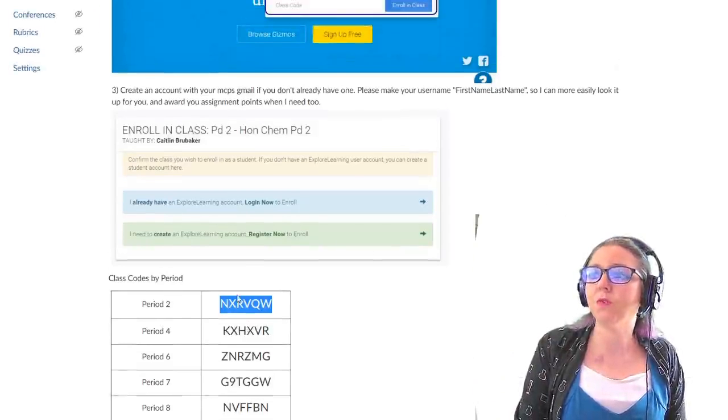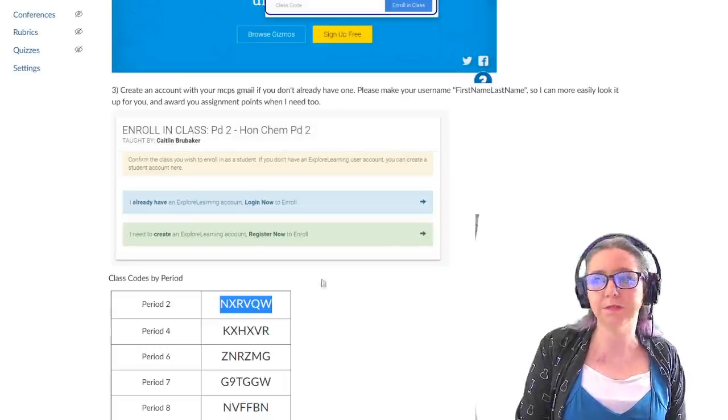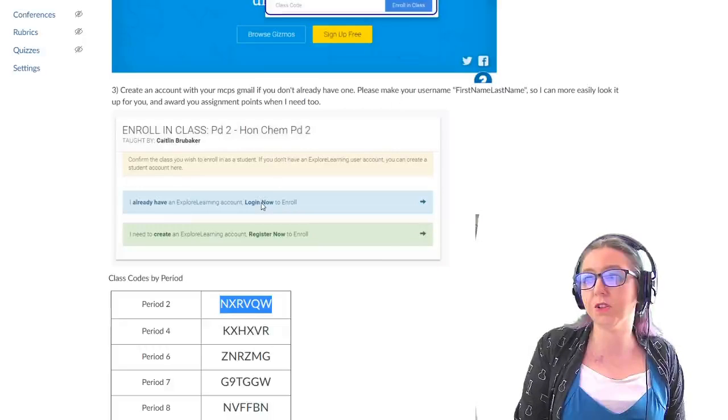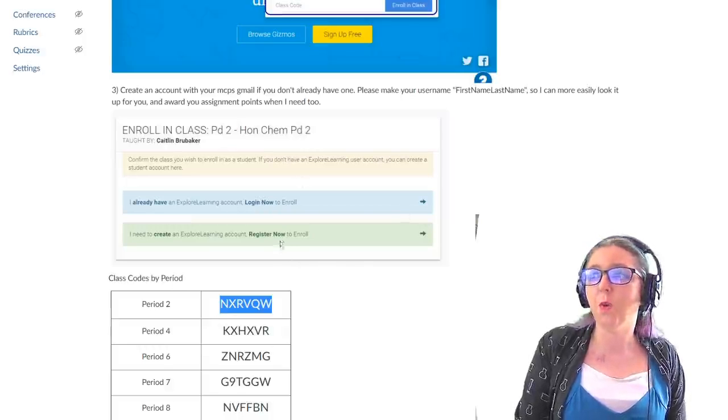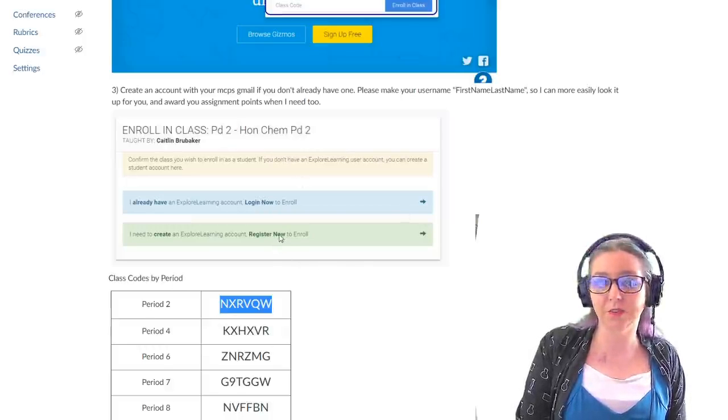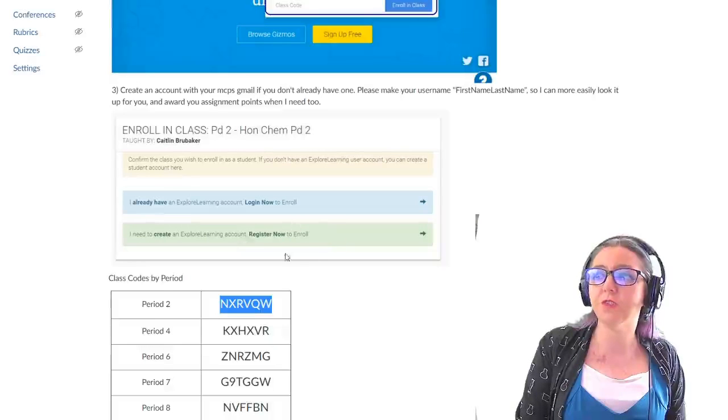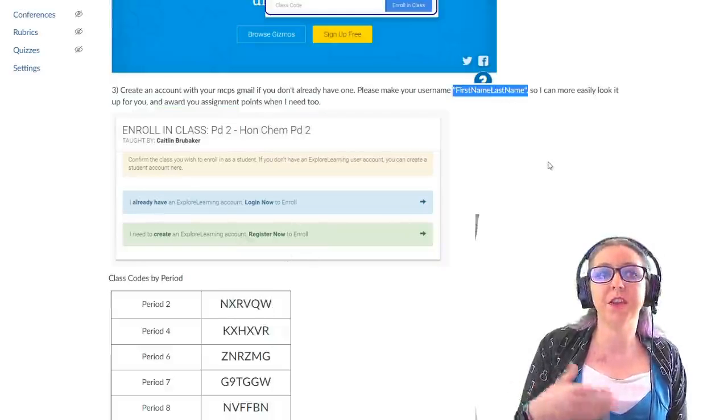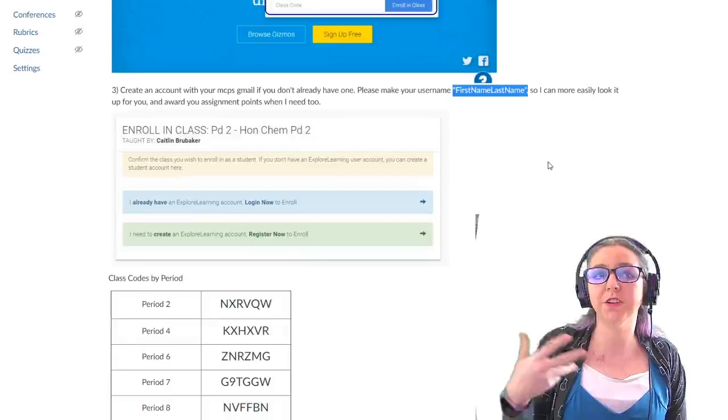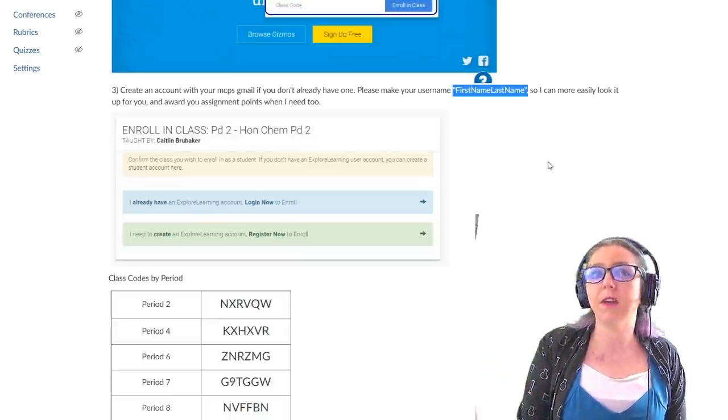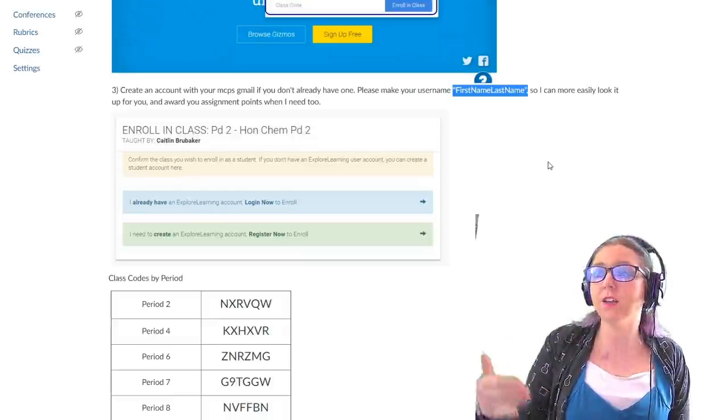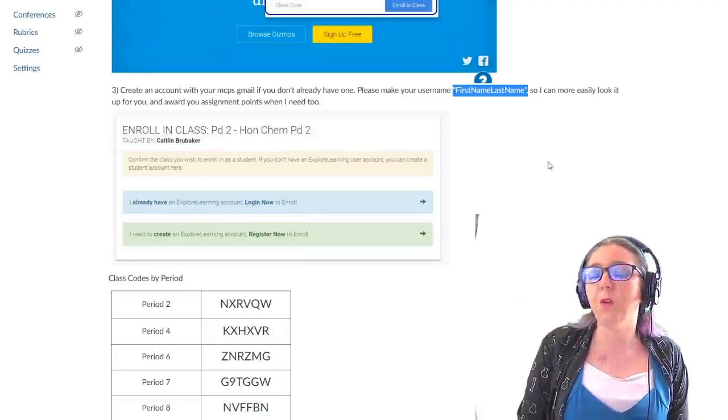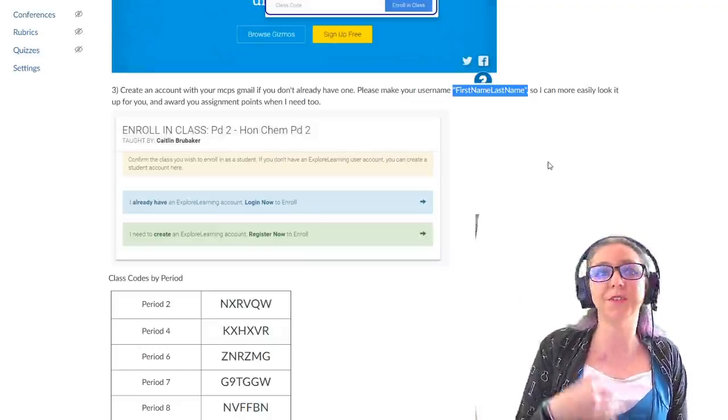Once you've enrolled, once you've put the class code in, then you either have the chance to log in to your current explorelearning.com account, if you made one last year, or you can register a new account. The one thing that I ask is if you are registering a new account, please make your username your first name and your last name, or your first name and your last initial. Having your first name and last name as your username will make it much easier for us to give you the points you deserve.